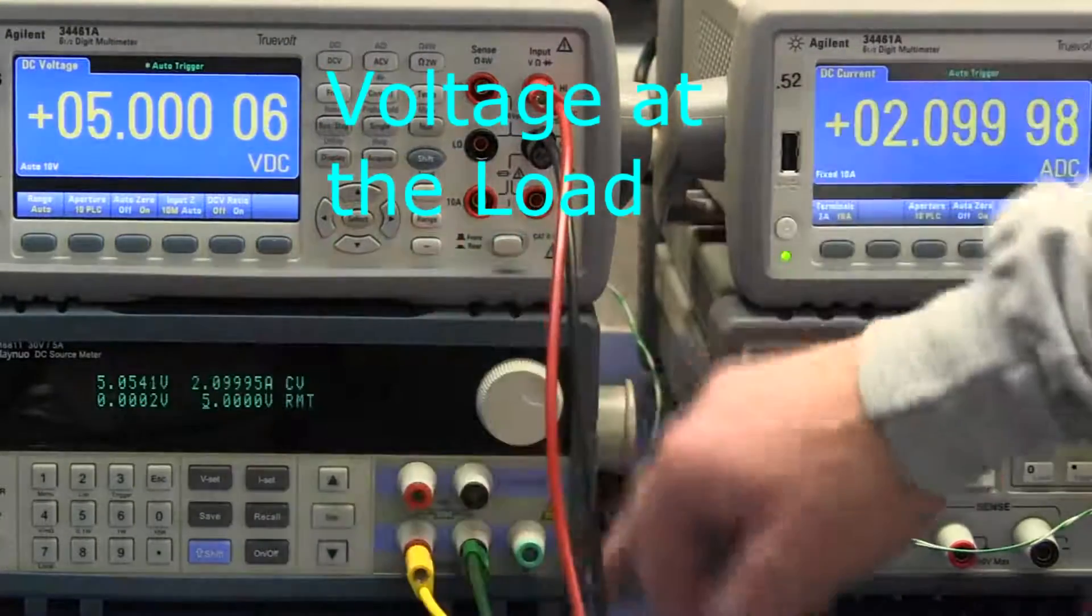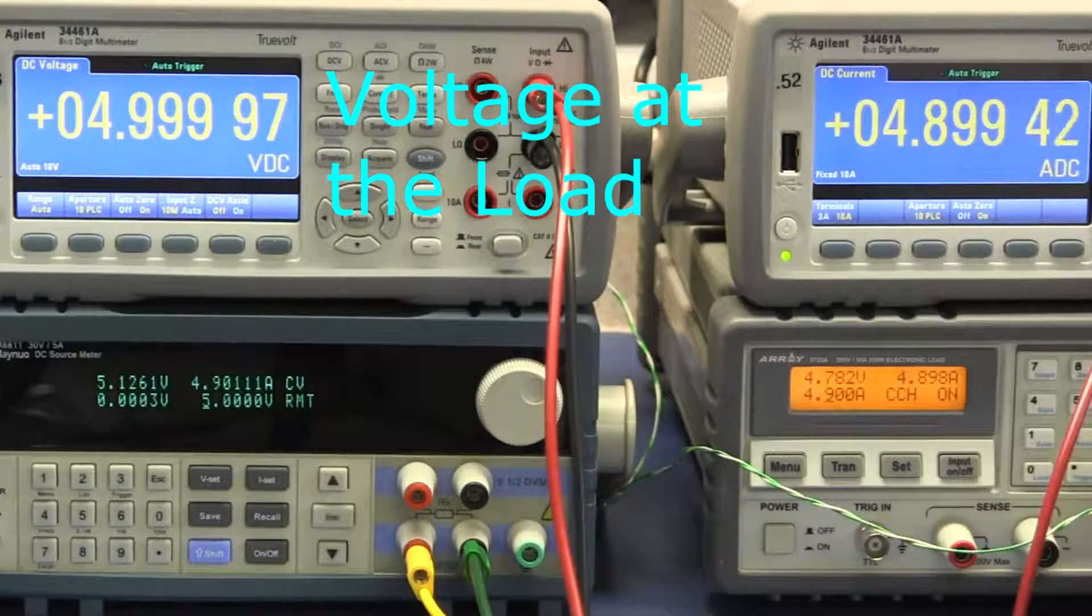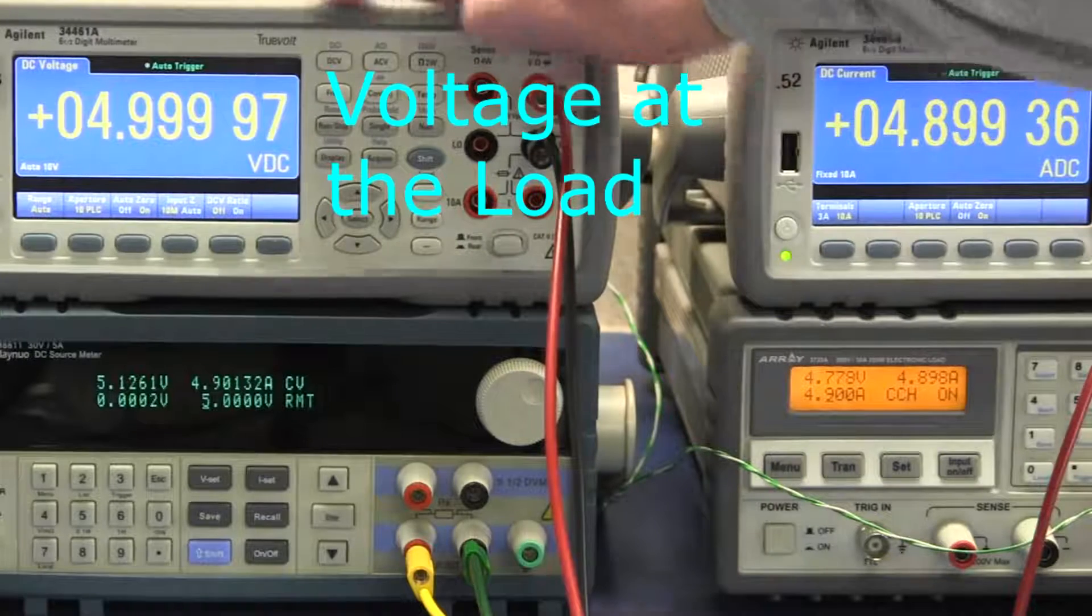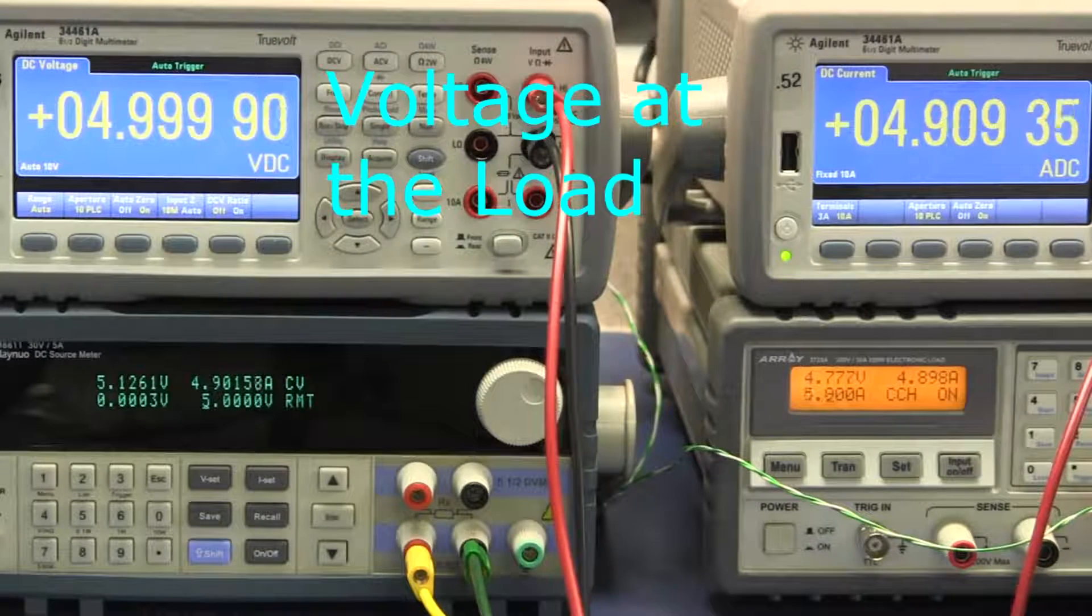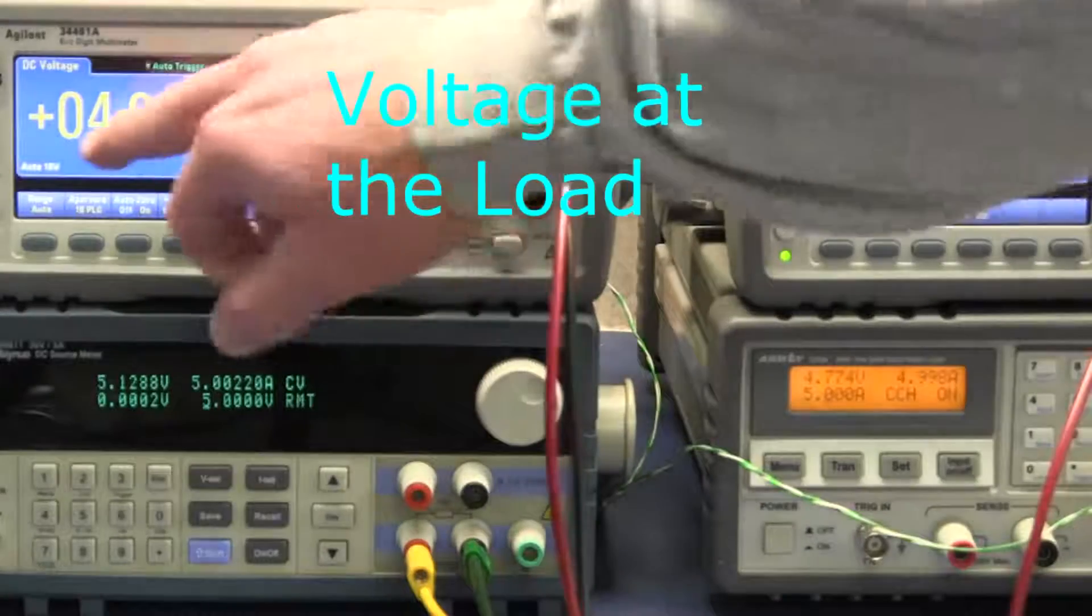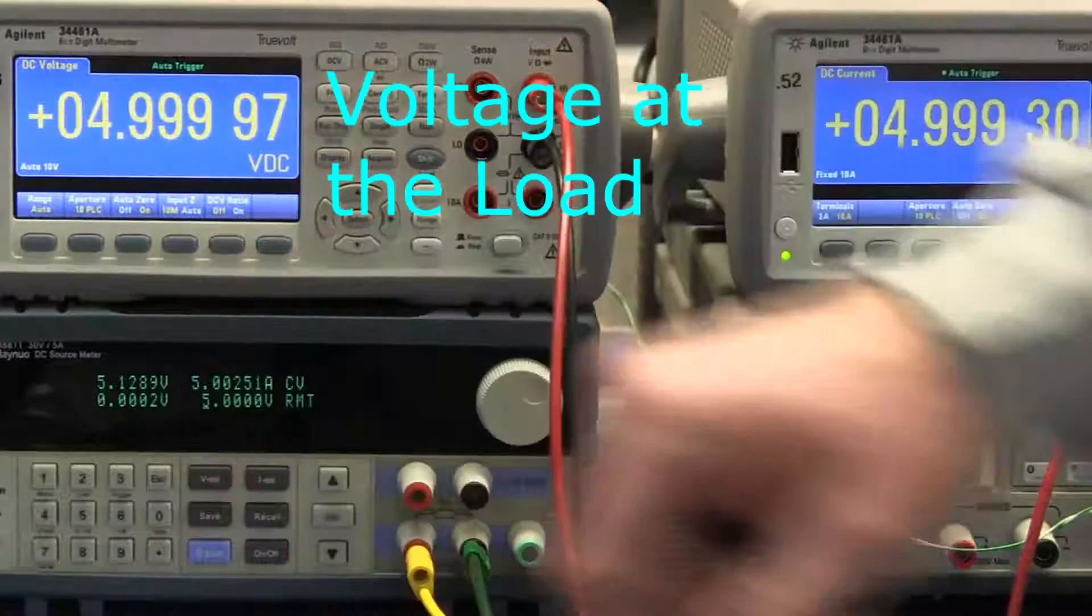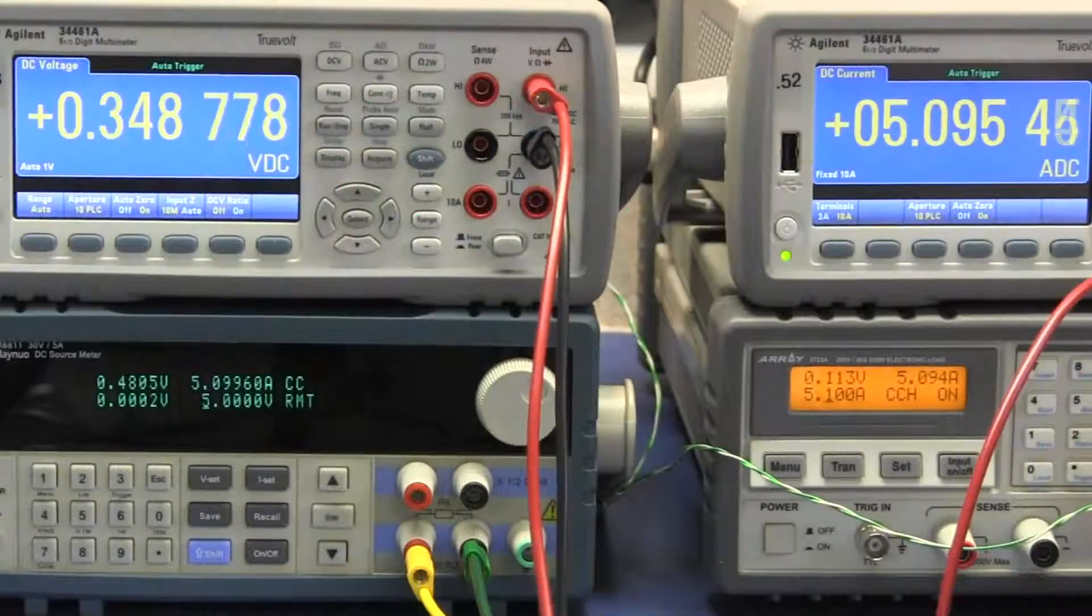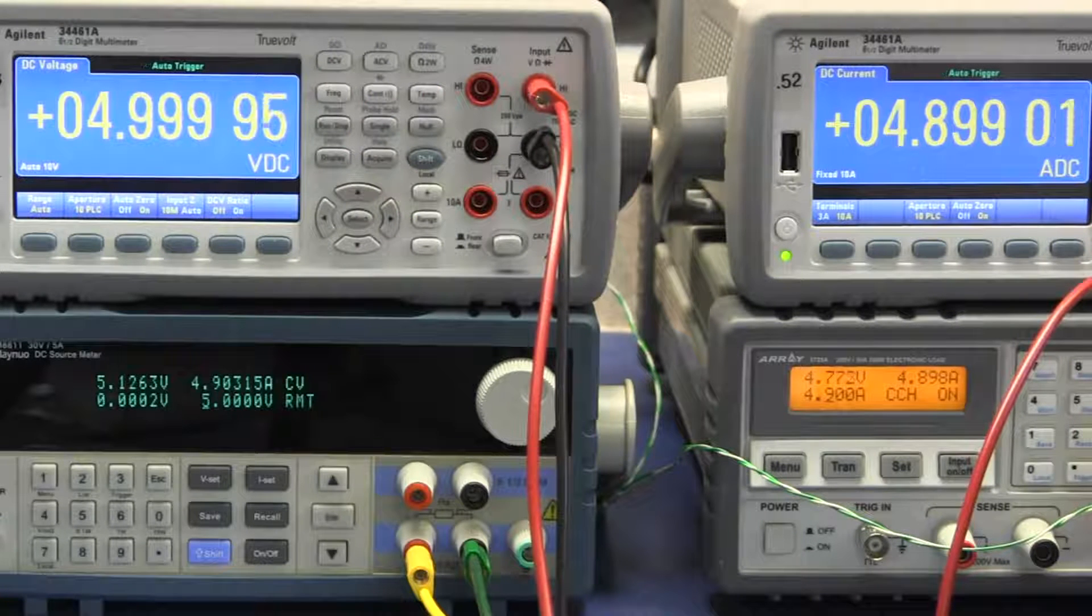It's reading, this is reading back the voltage going out on these terminals. 4.9 amps. We're still reading almost exactly 5 volts. One more. Yep. Maintaining. To do that, to get 4.99997, we're getting 5.1288 on the output terminals. So the 4-wire remote sense works really pretty well.